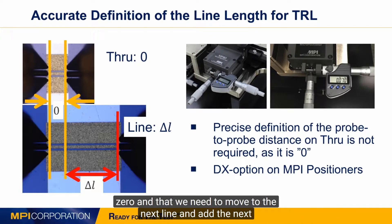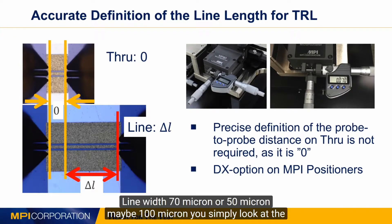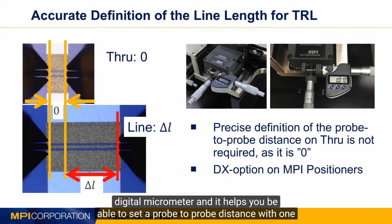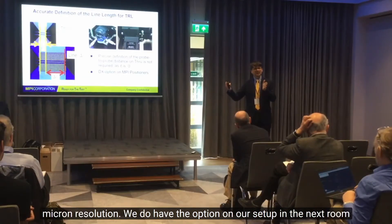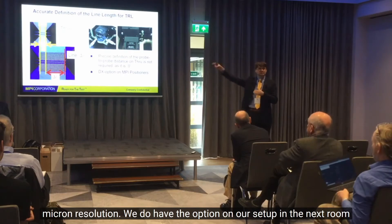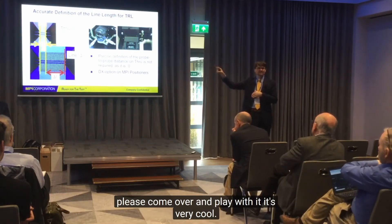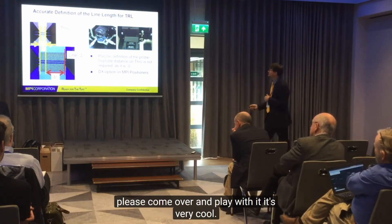When you need to move to the next line and add an extra length — like delta-L of 70, 50, or 100 microns — you simply look at the digital micrometer and it helps you set the probe-to-probe distance with one-micron resolution. We have this option on our setup in the next room — please come and play with it. It's really cool.